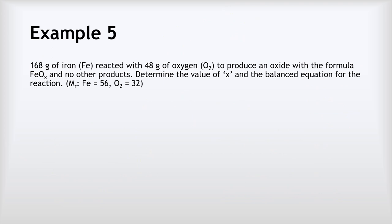Example five is very similar to the previous one, with the slight change that we're not given the starting equation — we have to work that out as well. 168 grams of iron reacts with 48 grams of O₂ to produce an oxide with formula FeOₓ and no other products. We need to determine the value of x and the balanced equation. Is it FeO, FeO₂, or FeO₃?